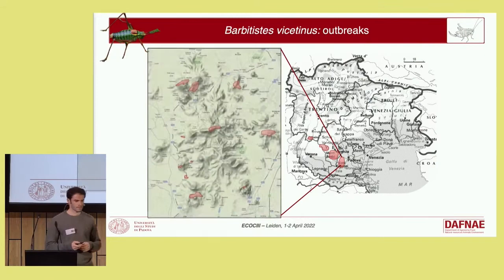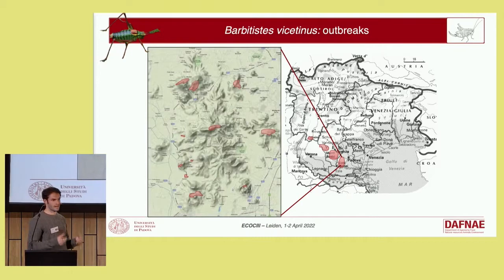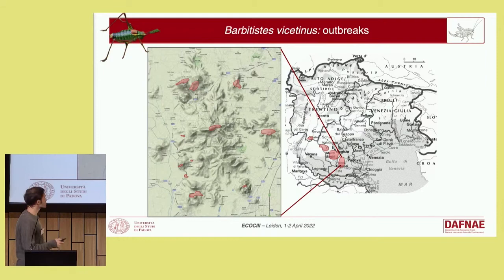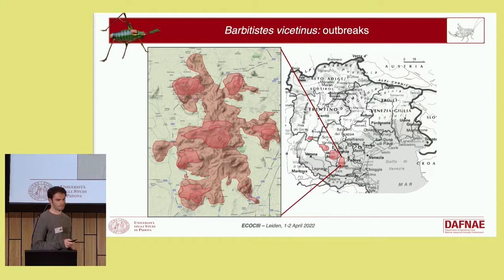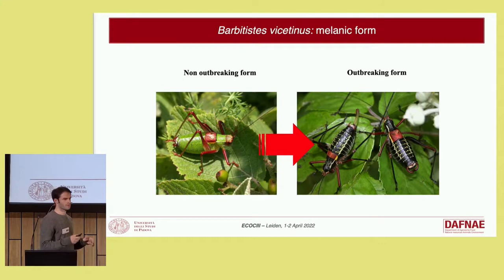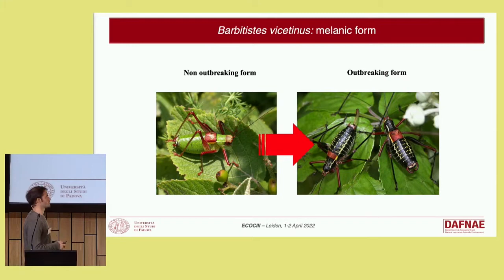This species was considered rare until 2008, when the first outbreaks appeared in the southern distribution range, in the Euganean hills — first located in some areas, but in the subsequent year affecting all the hillside area. This species can shift from a solitary form with a typical green coloration, which is typical also for the genus Barbitistus.